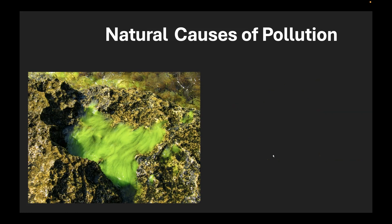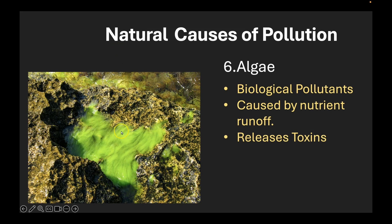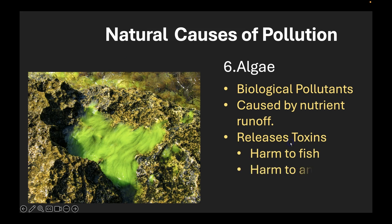Let's move to our last natural cause of pollution — that's algae. Algae is a biological pollutant and it is caused by nutrient runoff. When fertilizers run off into water, they cause the blooming of certain types of algae in a very excessive manner. These algae release toxins into the water. When there's a large amount of algae in a particular region, the amount of toxins are high and that causes harm to fish, causes harm to animals. And if humans consume these fish, it causes harm to humans as well.